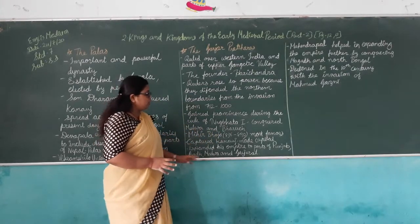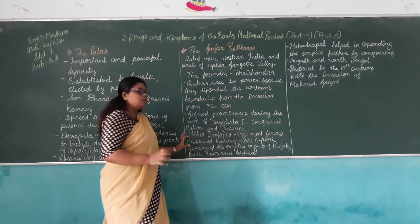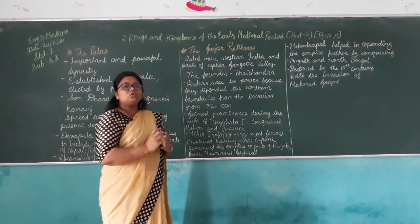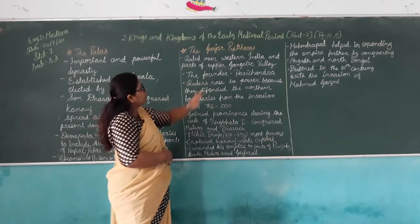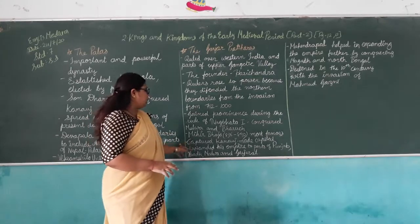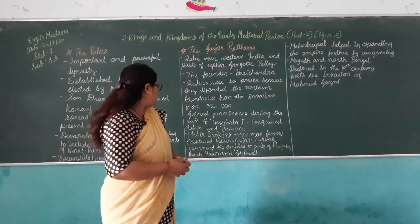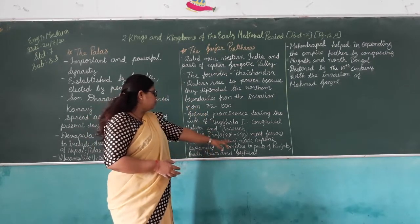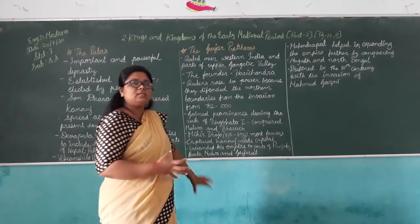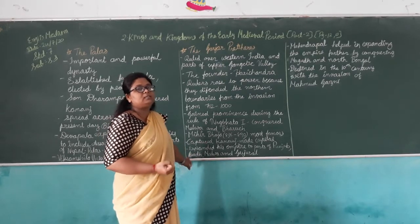Mihir Bhoja, ruling from 836 to 885 CE, was the most famous ruler of the Gurjara Pratiharas. He captured Kannauj and made it his capital. He expanded his empire to parts of Punjab, Awadh, Malwa, and Gujarat.